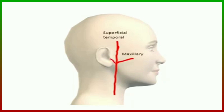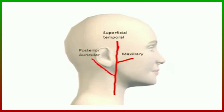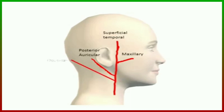As the external carotid artery travels upward, it gives off the posterior auricular artery, which arises from the posterior aspect. The occipital artery also arises from the posterior aspect. The facial artery arises from the anterior aspect.